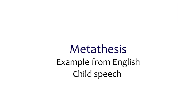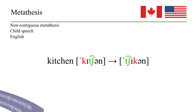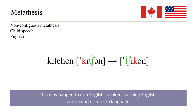Speaking of children, in English child speech the word 'kitchen' is sometimes pronounced as 'chicken.' This might also occur in adults occasionally, or in people who have learned English as a second or foreign language, but in child language it is a common thing.